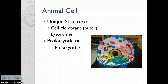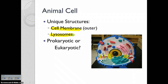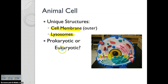Our last major cell type are animal cells. These do not have cell walls — they have cell membranes as their outer layer. They also have these cool organelles called lysosomes, which are digestive organelles. They contain enzymes that break waste down and things like that. Those are the defining characteristics of an animal cell. Animal cells are eukaryotic — the only thing that's prokaryotic are bacteria.